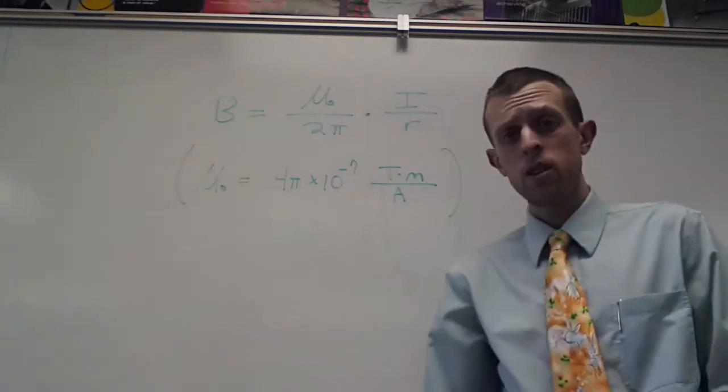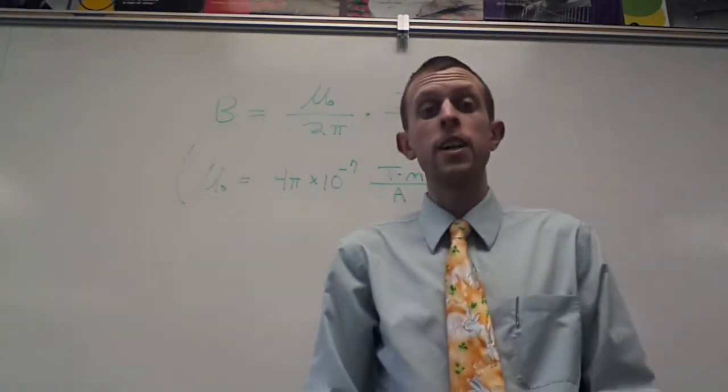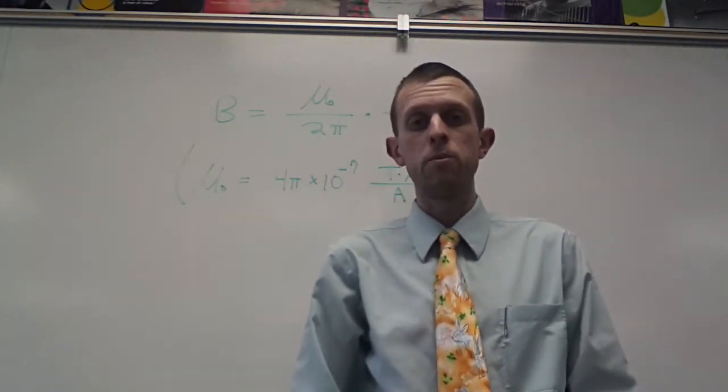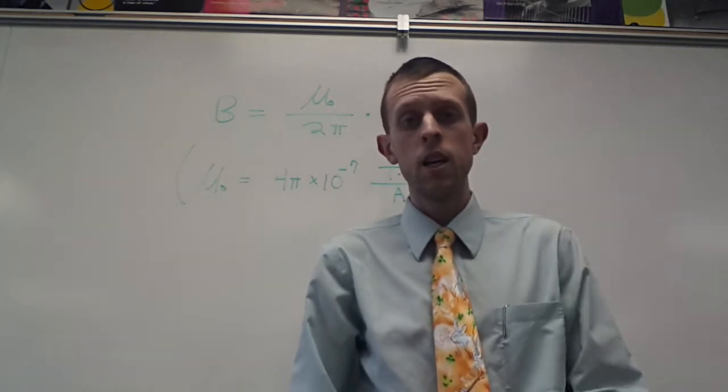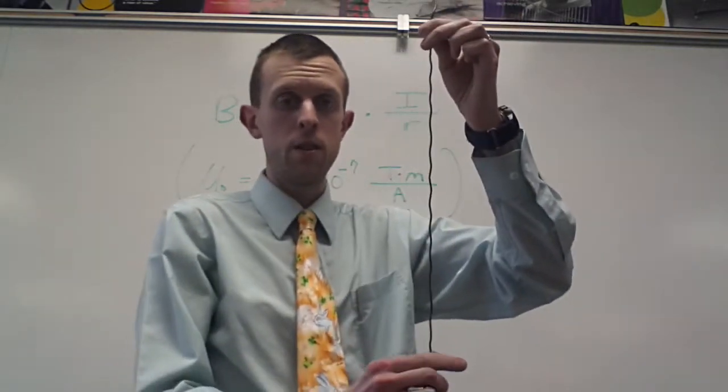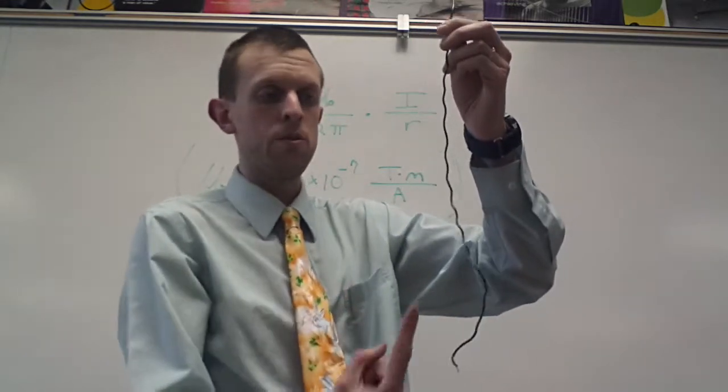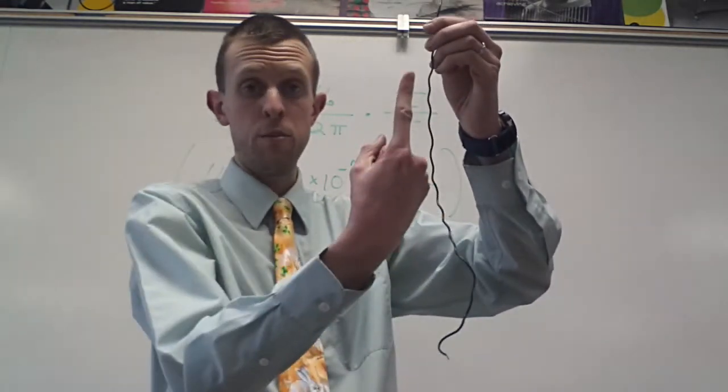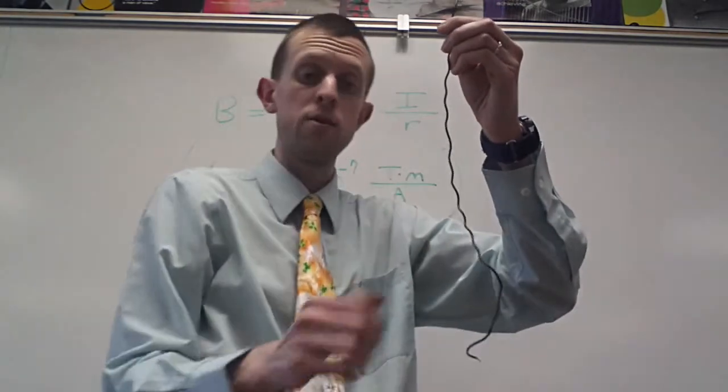Now, as far as direction goes, we actually have another right-hand rule to help us figure out direction on these. So if you have a wire, and let's say that current in this wire is going from top to bottom, so it's flowing this way. The positive charge is moving this way. The electrons are moving this way.